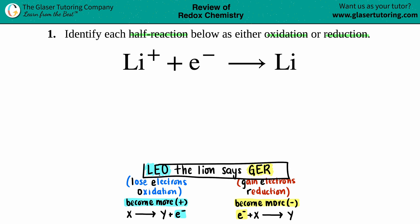LEO the lion says GER. LEO stands for lose electrons—that's always oxidation. So if your equation is showing a loss of electrons, that's always oxidation. On the flip side, if you're gaining electrons, that's reduction. So gain electrons, reduction—that's the GER part.